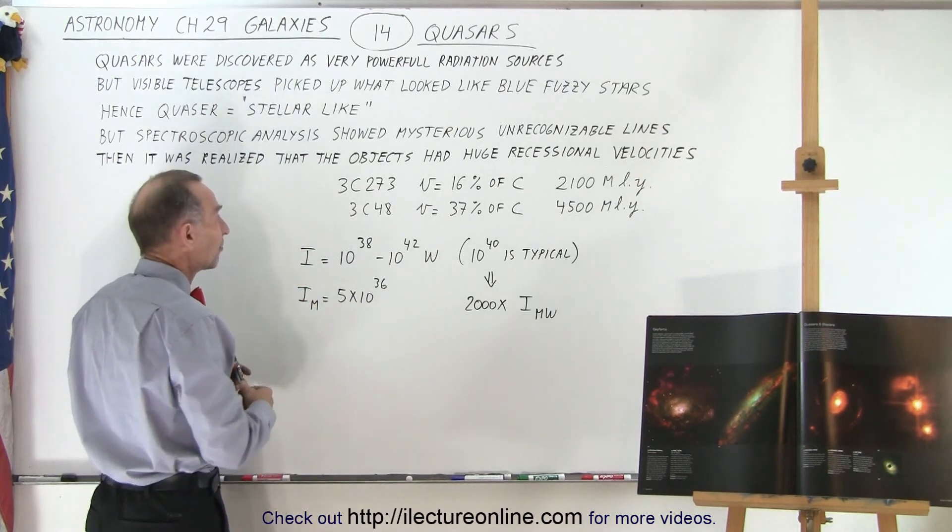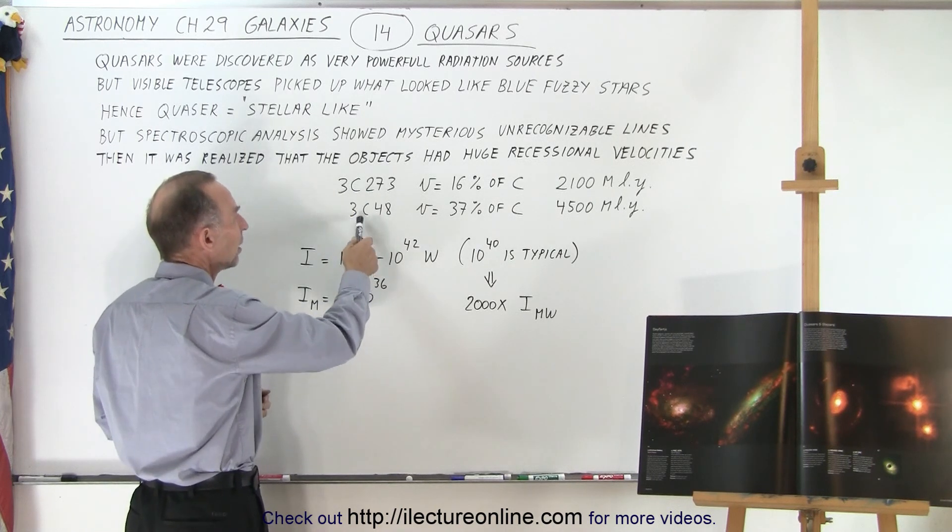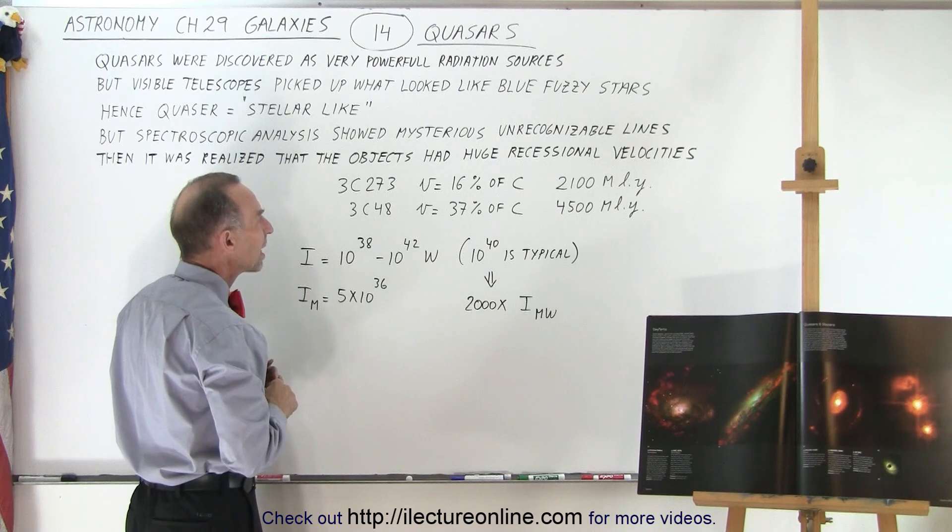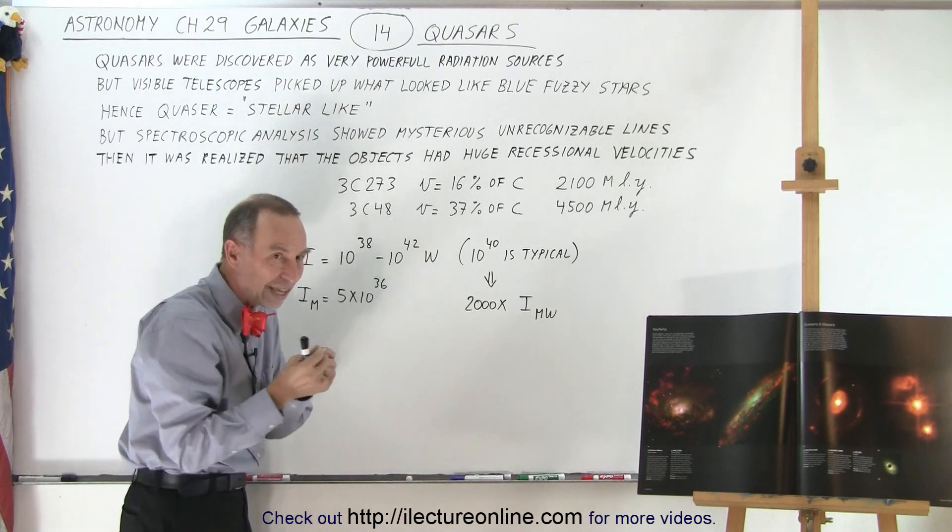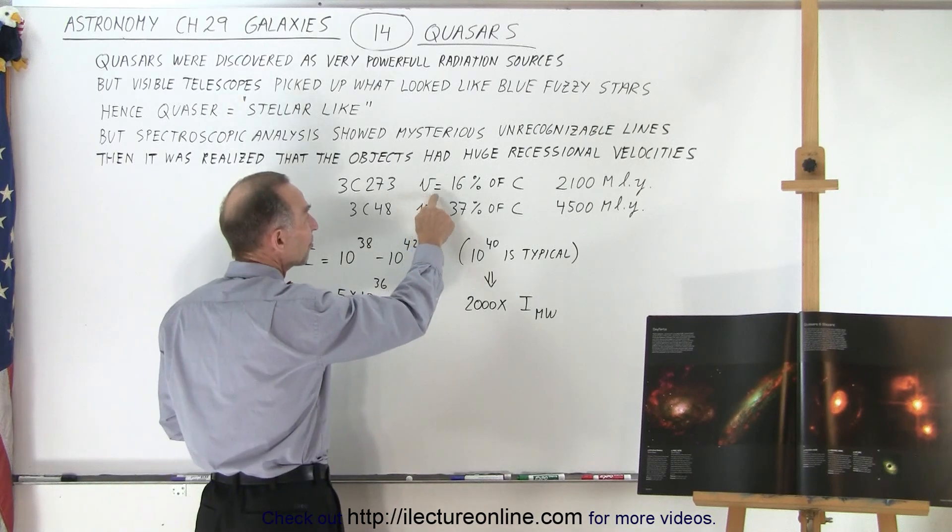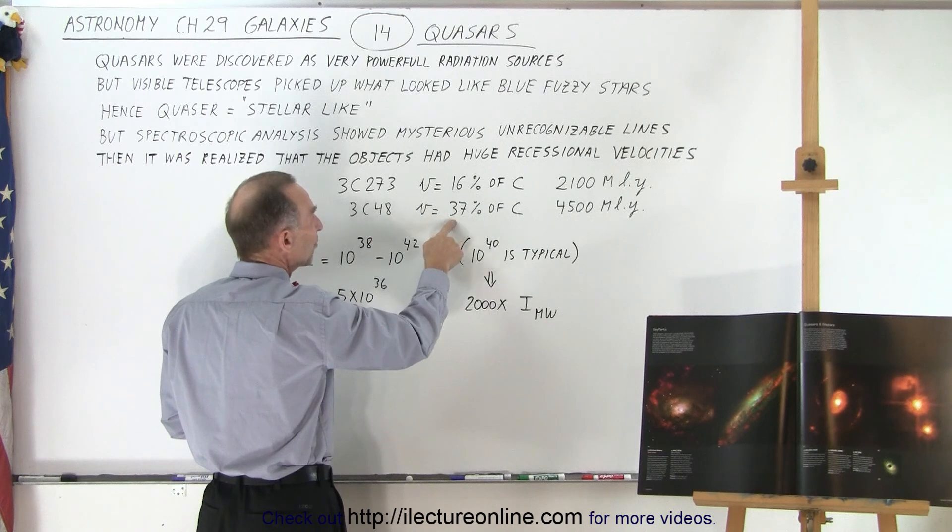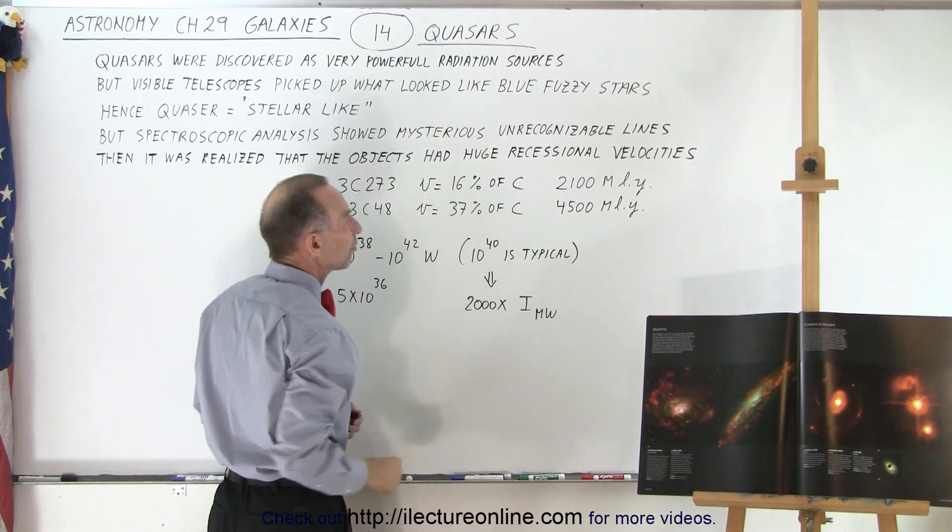There were two objects that became famous when they first discovered them. One is called 3C273, the other one was called 3C48. 3C273 has such a redshift that it was associated with a velocity of 16% the speed of light, and 3C48 was moving away from us at 37% the speed of light.